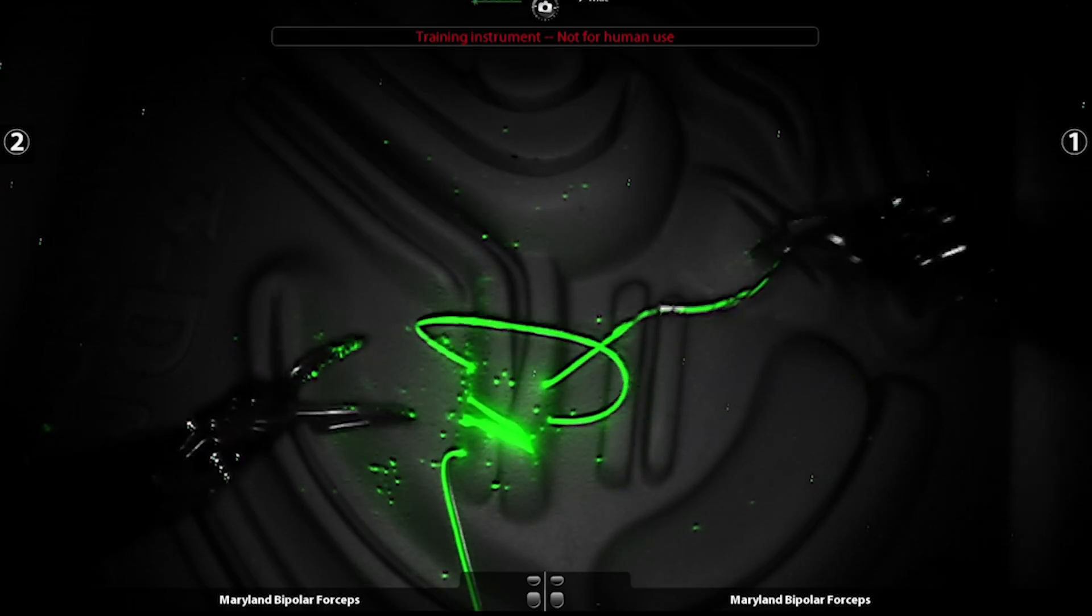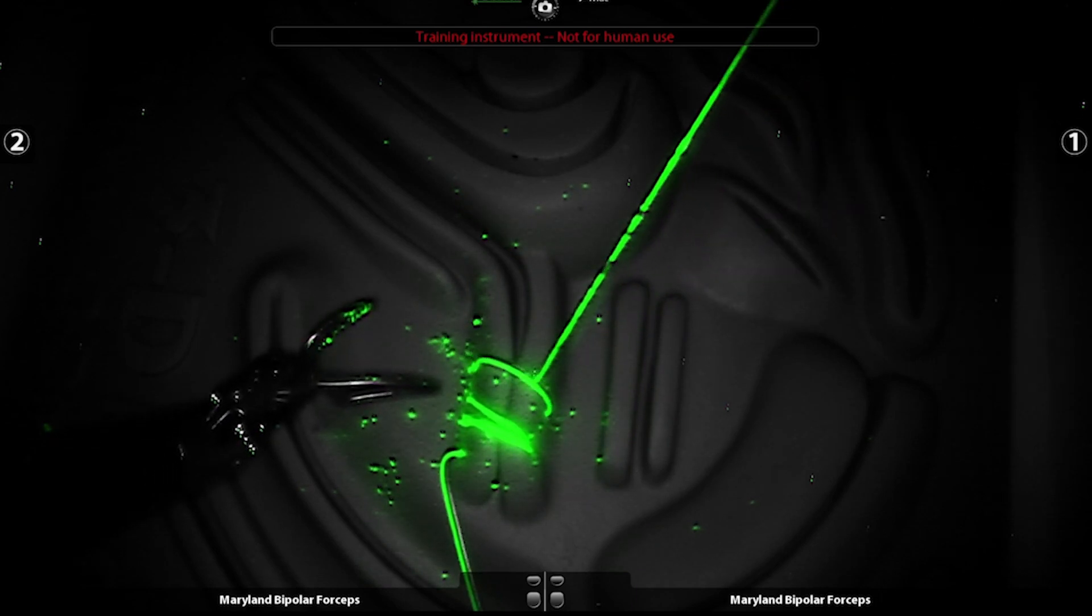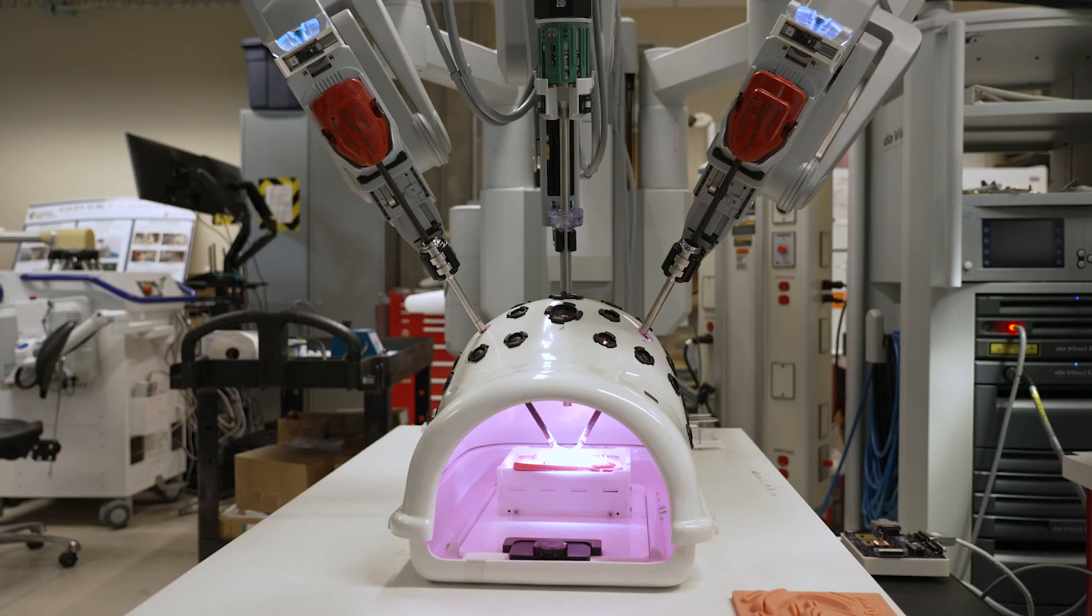That infrared camera displays the suture to the surgeon, and the infrared light allows that suture to be seen through blood and tissue.